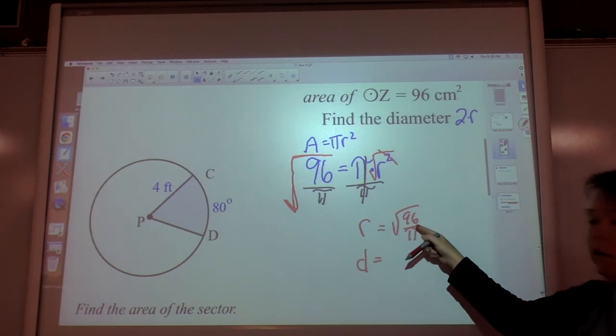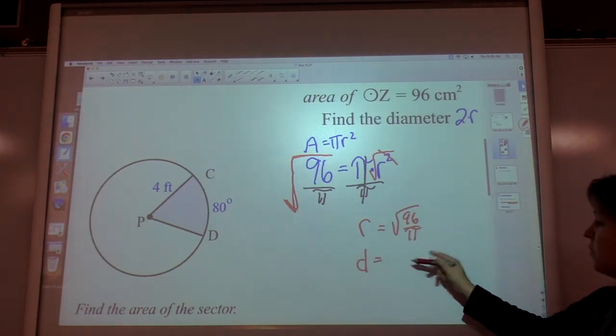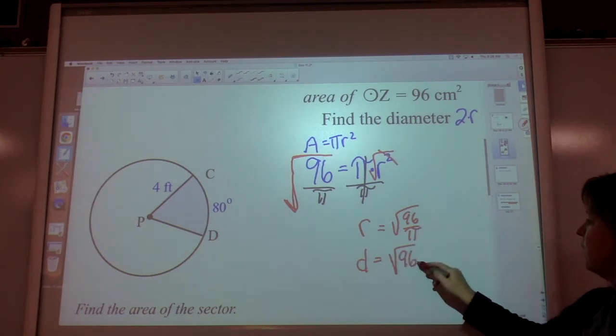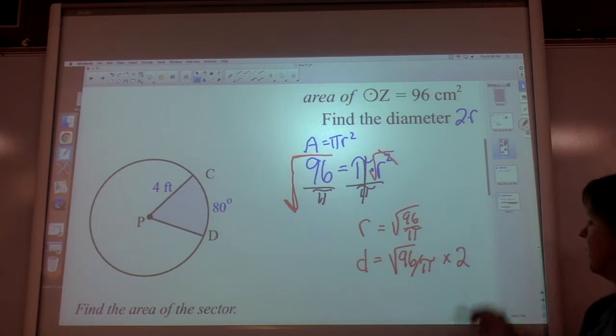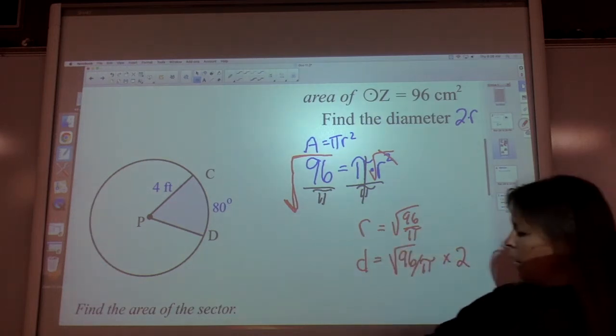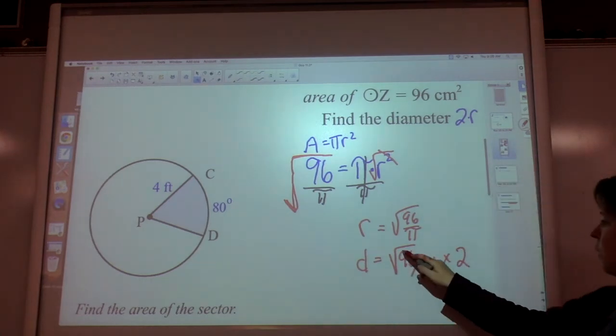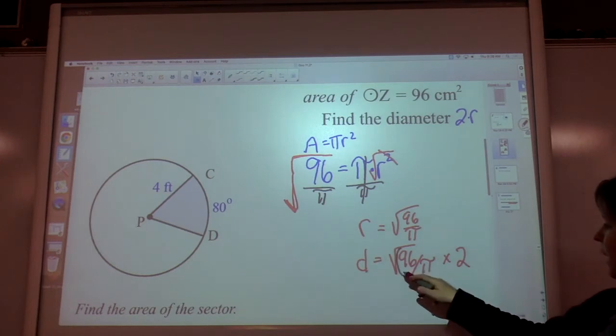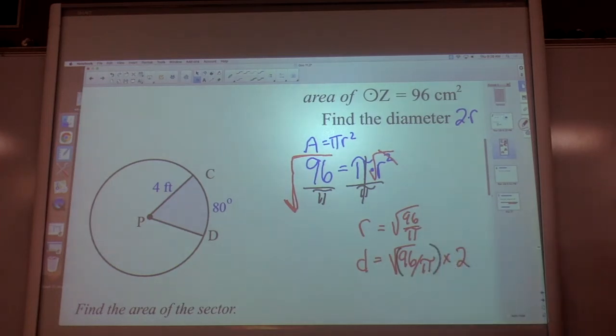Diameter, and we can't calculate that because we're going to get an irrational decimal that's going to be rounded. Diameter, we're going to have to take the square root of 96 over π and times it by 2 due to the fact that we need to double the radius. Make sure you know how to work the square root button. If you have a Texas Instrument that gives you a parenthesis, you will need to finish the parenthesis after π. Try it.